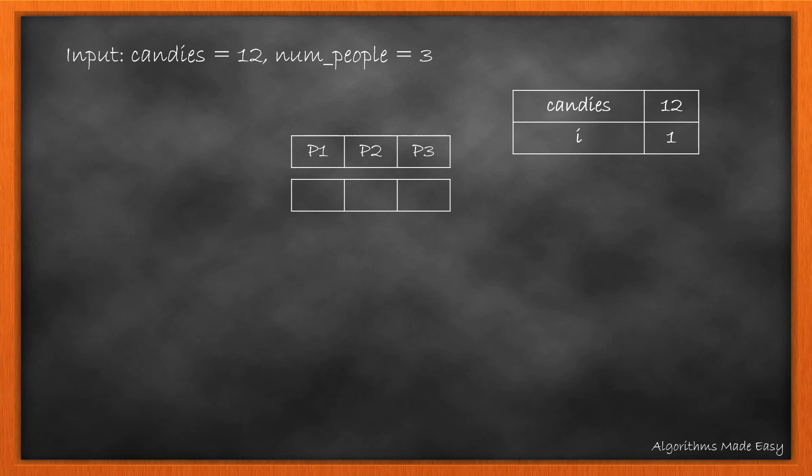Let's create a table similar to what we showed before. However, in the solution, we can update the same array. Starting with the first person, we check the number of candies we have and the candies we need to give. If we have enough candies, we give according to the calculation; otherwise, we give all remaining candies.